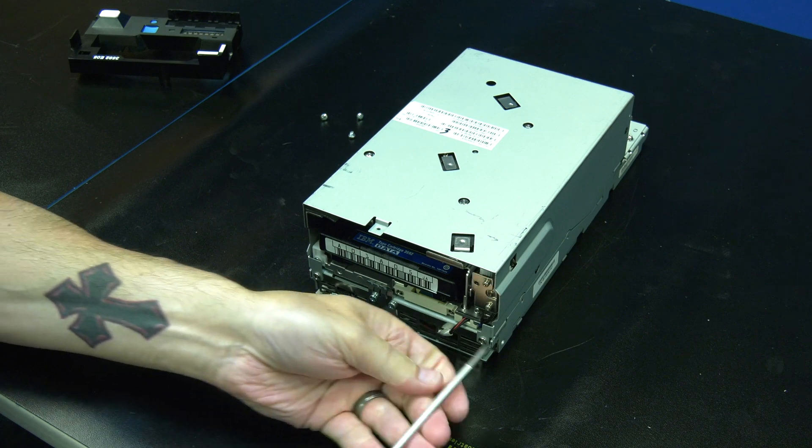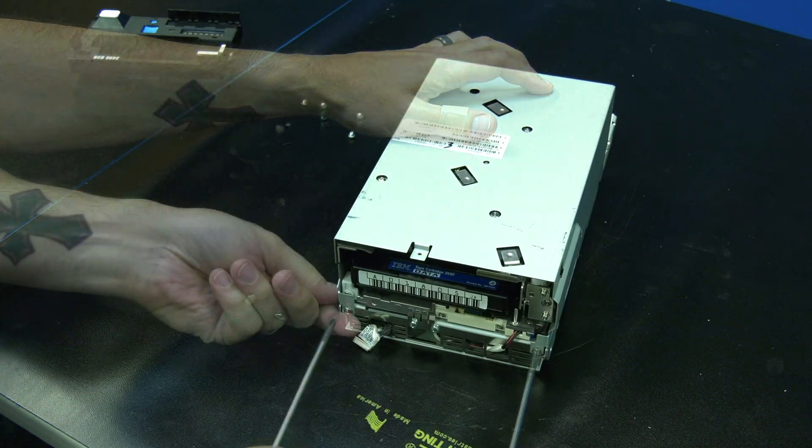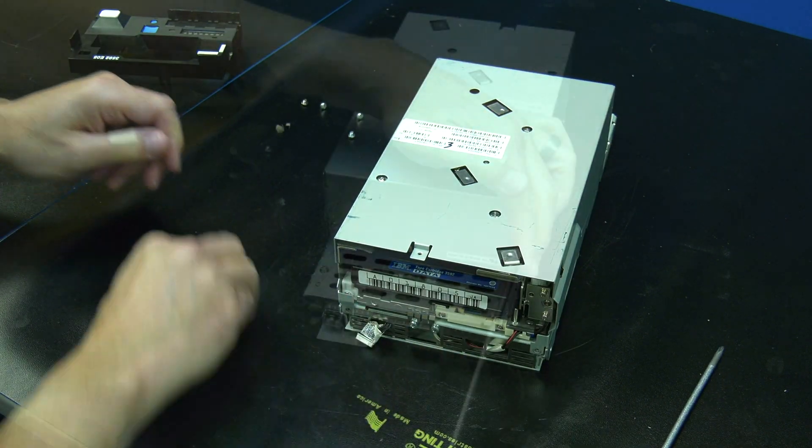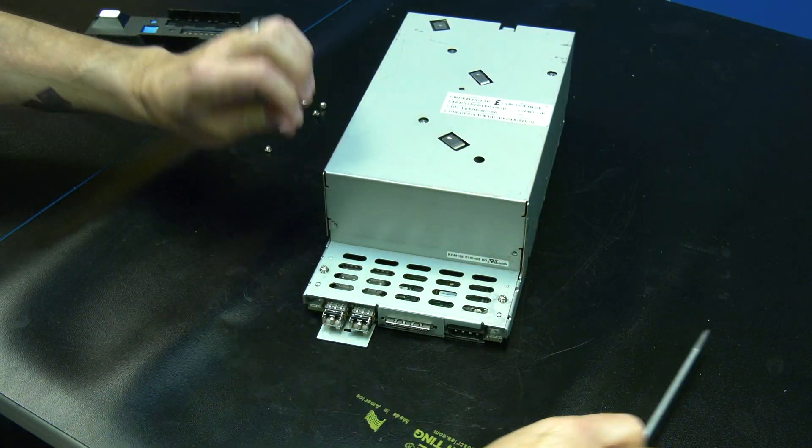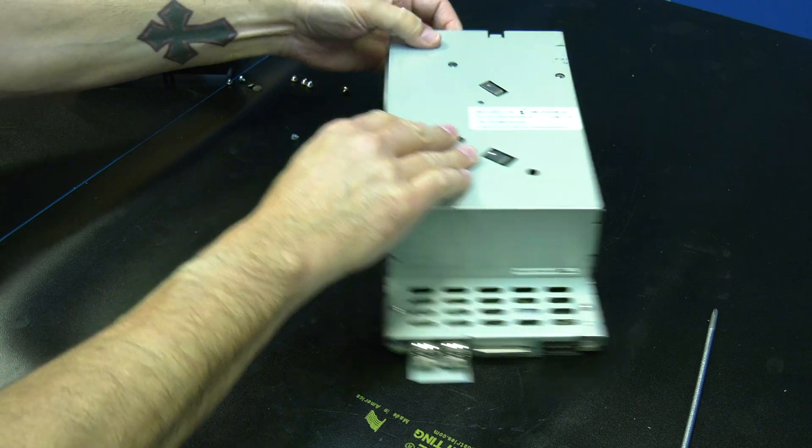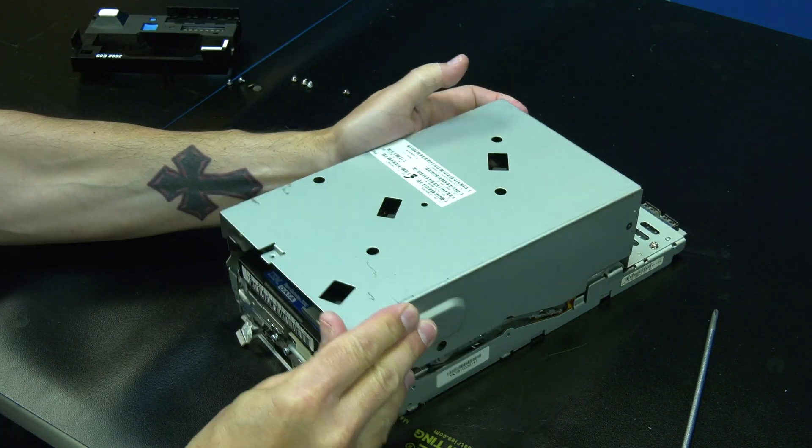Once the faceplate has been removed, you will then need to use the Phillips screwdriver to remove the two screws at the front and the two screws at the rear that hold the top cover of the drive on. Once the screws are removed, you can carefully pull the top cover straight up and off the drive and set it to the side.